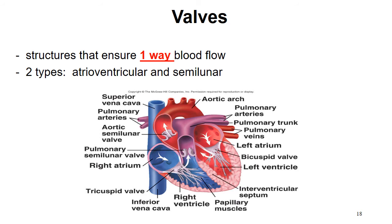Before we continue, we must discuss valves. At each of the junctures of the major chambers there is a valve. Valves are structures that ensure one-way blood flow — we don't want oxygen-rich and oxygen-poor blood to mix. There are two categories of valves: atrioventricular (AV) valves, which are between the atria and ventricles, and semilunar valves. Semi means half, lunar means moon — they look kind of like a half moon. Four chambers, four valves.